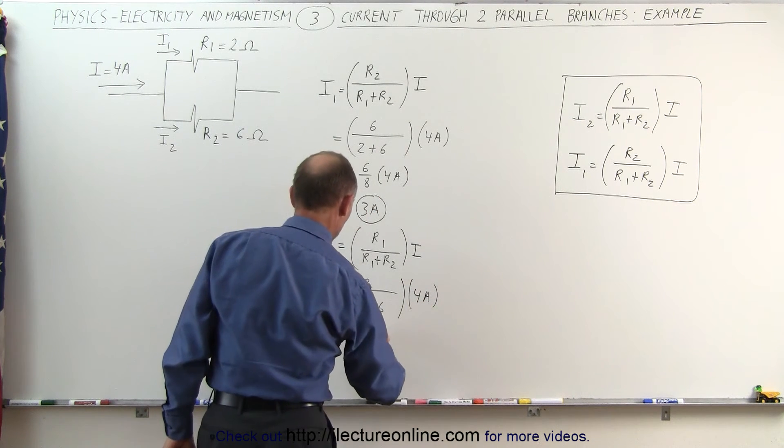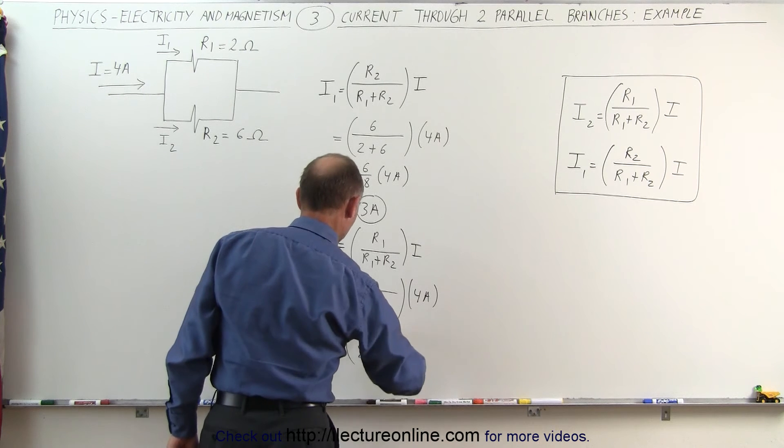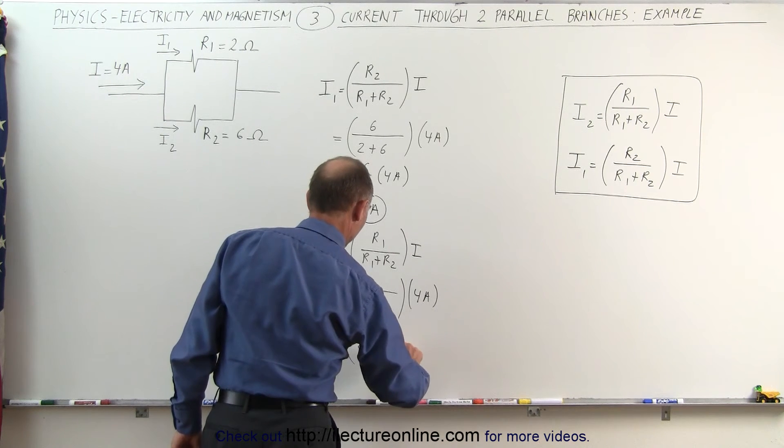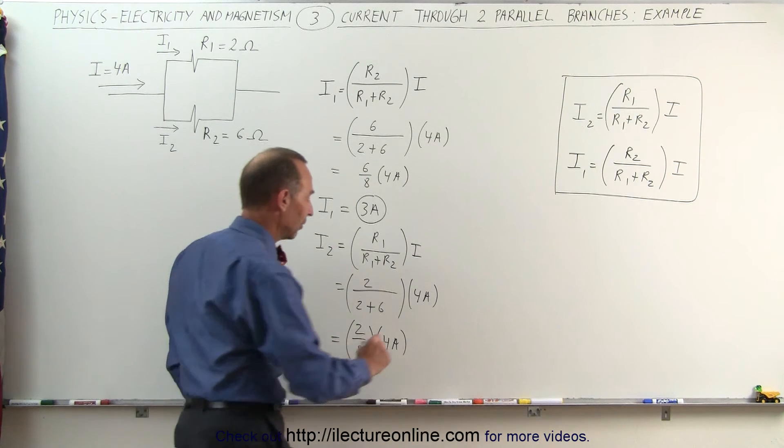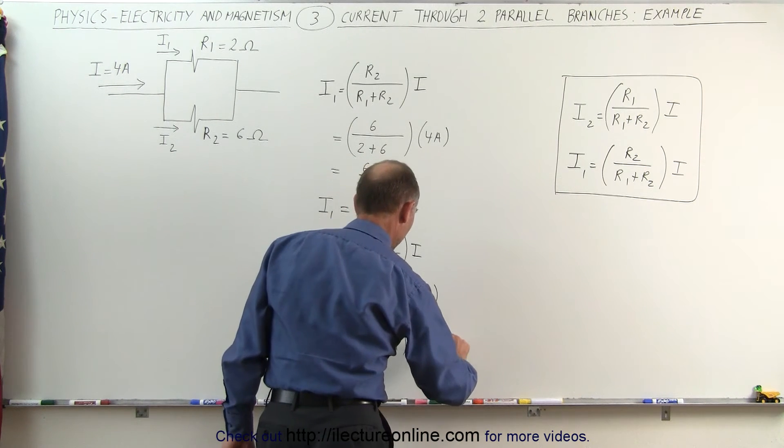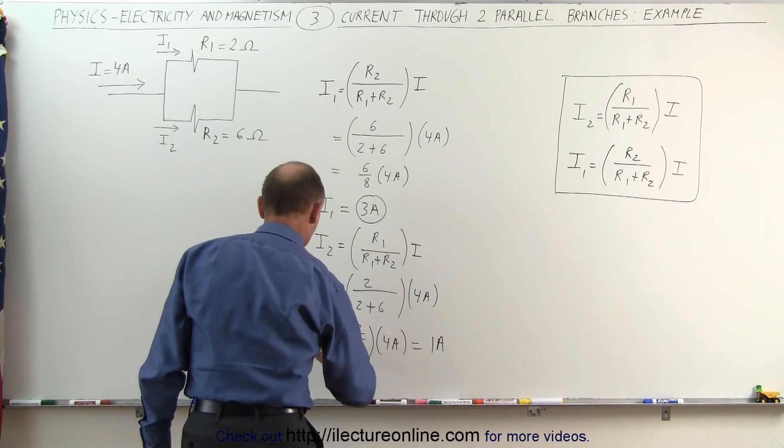which equals 2 divided by 8 times 4 amps. 2 divided by 8 is 1 quarter. 1 quarter times 4 amps equals 1 amp, and that would be the current in the bottom branch.